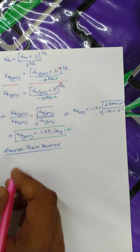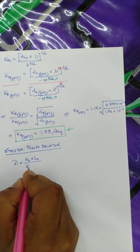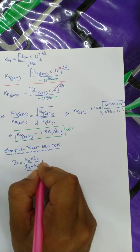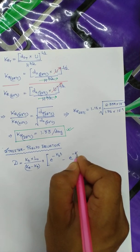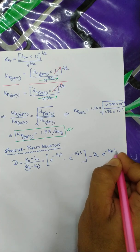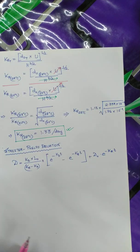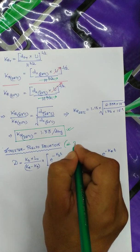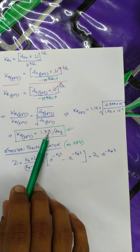The Streeter-Phelps equation is: D equals [KD · L₀ / (KR − KD)] · [e^(−KD·t) − e^(−KR·t)] + D₀ · e^(−KR·t). The key reason we have done all this calculation is that everything must be at 28 degrees centigrade. We found standard values at 20°C but had to convert to 28°C before plugging into the formula.